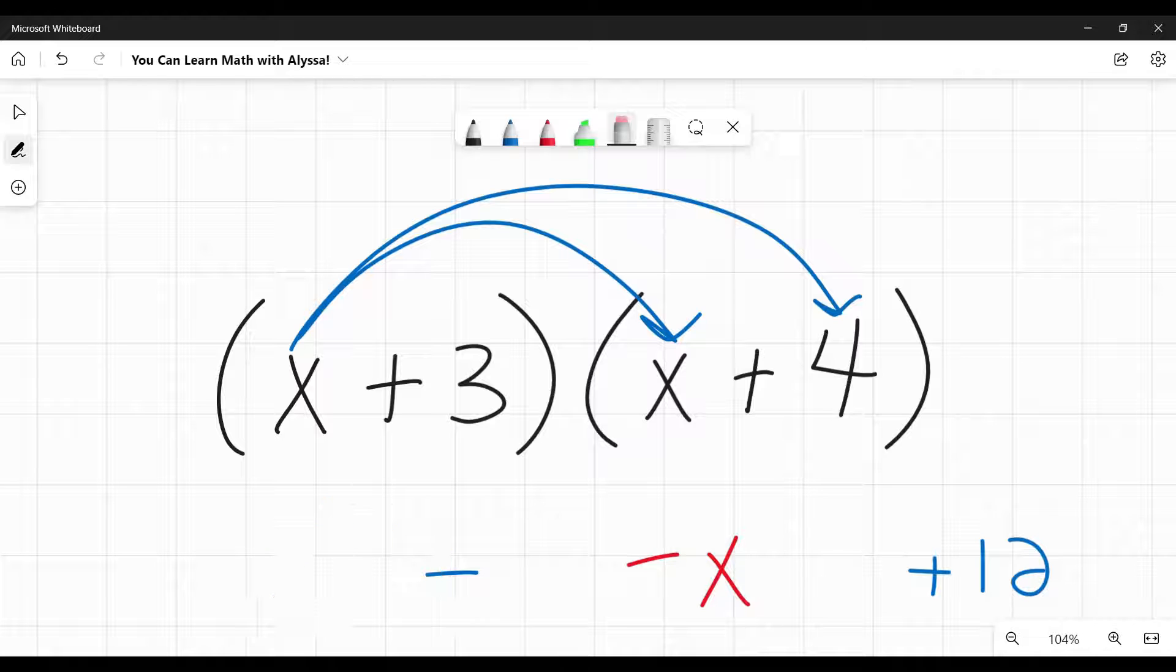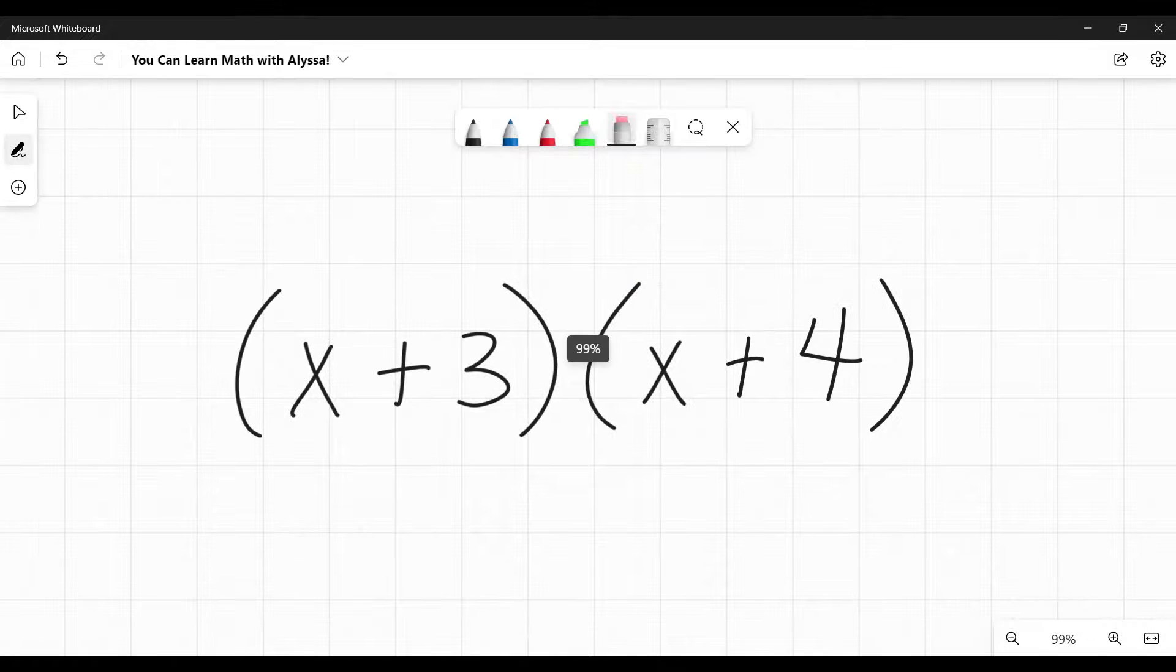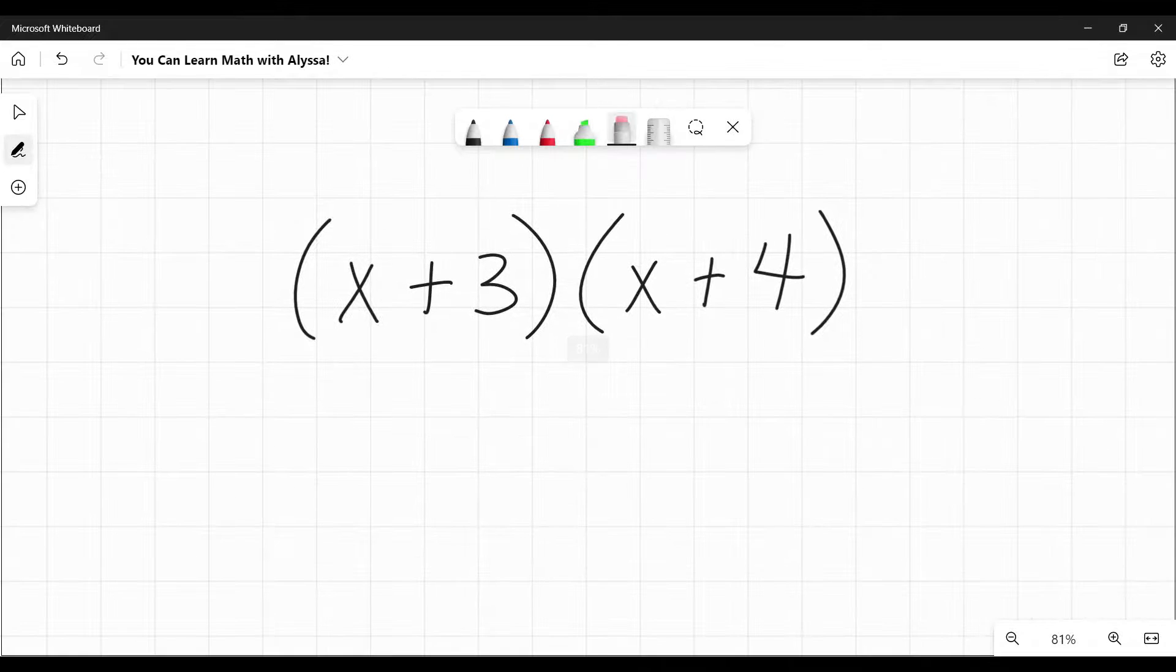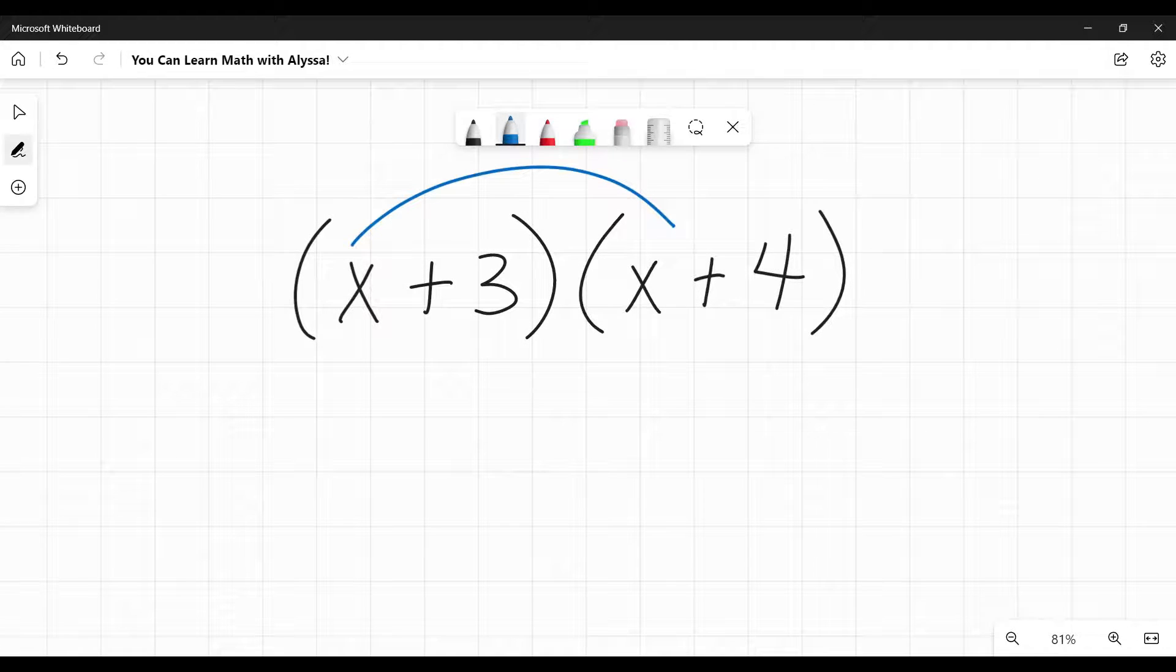Many teachers present this slightly differently. They call it the FOIL method, F-O-I-L. And the FOIL method here stands for first, outside, inside, last.